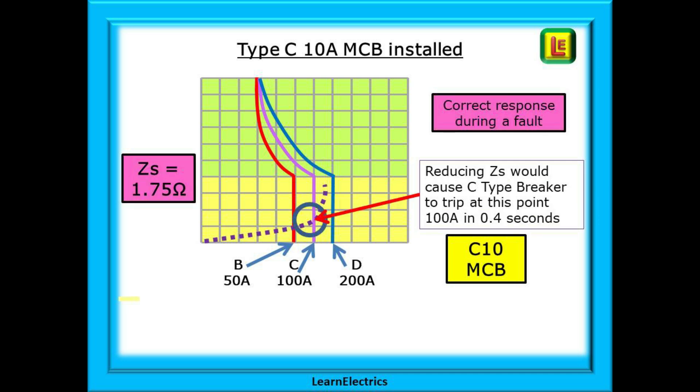The correct solution is to check the ZS before changing the type of breaker. If the ZS was only 1.75 ohms fault current would flow easily exceeding the 100 amps required and the MCB would trip in less than 0.4 seconds for safety. Because we made the circuit less sensitive, we had to reduce the ZS to make more fault current flow. Not working current, but fault current. This extra fault current restored the sensitivity to faults back to what it should be.